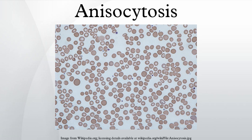Regarding types, anisocytosis is identified by RDW and is classified according to the size of RBCs as measured by MCV. According to this, it can be divided into several categories.